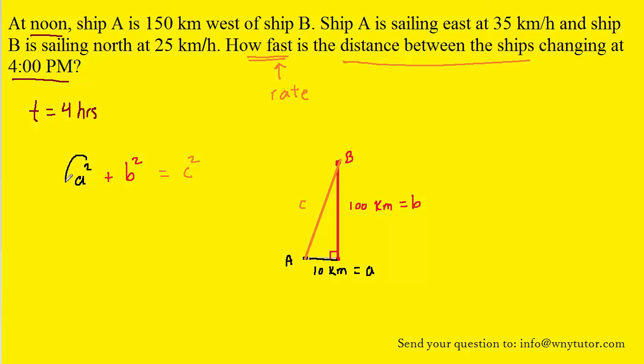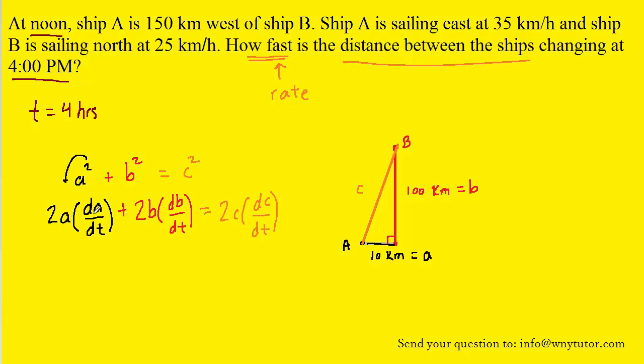So for the A squared term, we would pull down the exponent to make it 2A, subtract 1 from the exponent so it becomes A to the first, but then we have to multiply by the derivative of A with respect to time. That's an important step in any related rates problem, is to make sure you multiply by the derivative of the variable with respect to time. So we'll do the same thing for B and C. Notice that 2 appears in each term of the equation, so we can divide each term by 2 and cancel it.